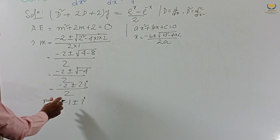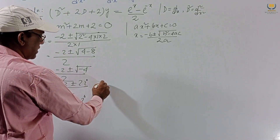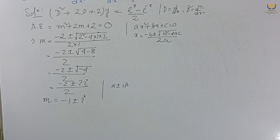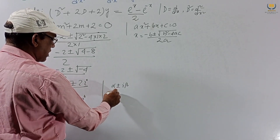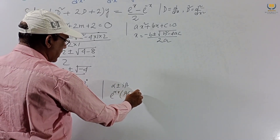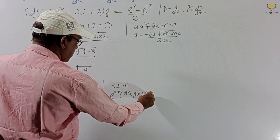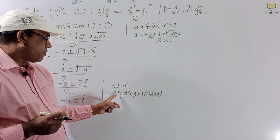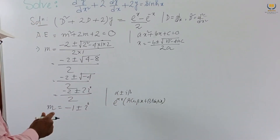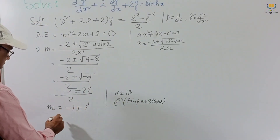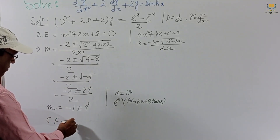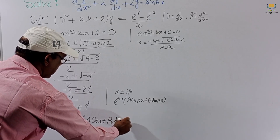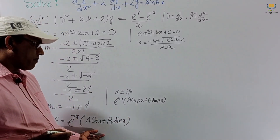Since the roots are complex conjugates of the form α ± iβ, the complementary function formula is e^(αx)(A cos βx + B sin βx). Here α = -1 and β = 1, so the complementary function is e^(-x)(A cos x + B sin x).